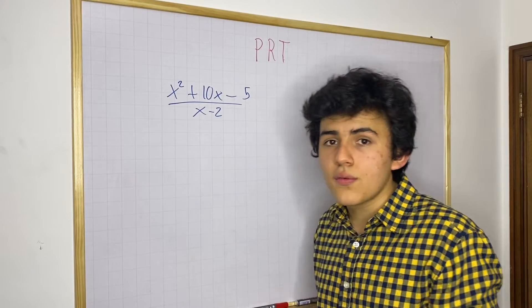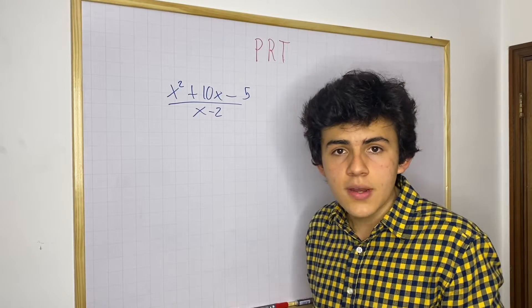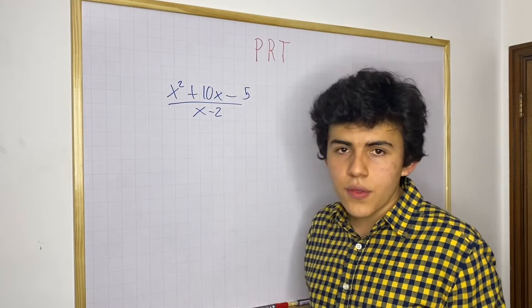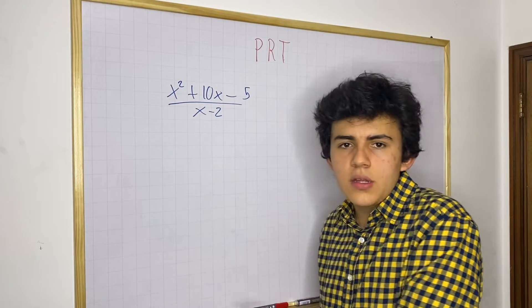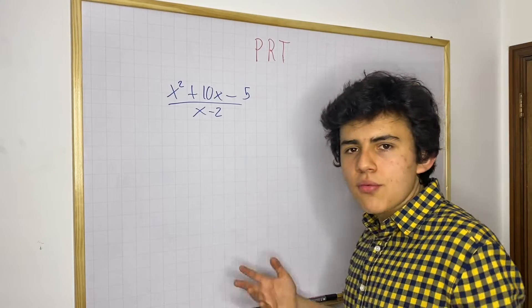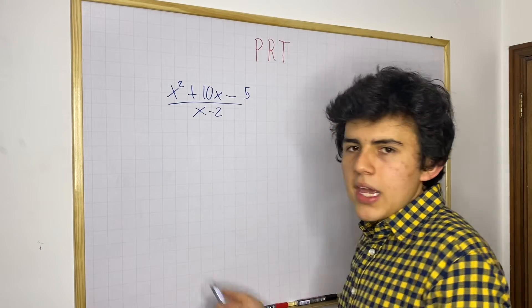One thing we could do is of course use synthetic division and find the third value that we get because this is a linear term so we know our third value is our remainder, but something we can do is use the polynomial remainder theorem to do it way easier.